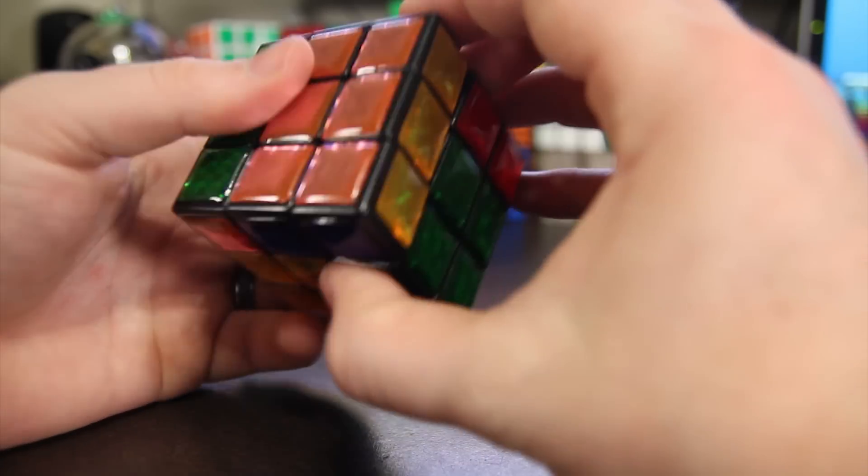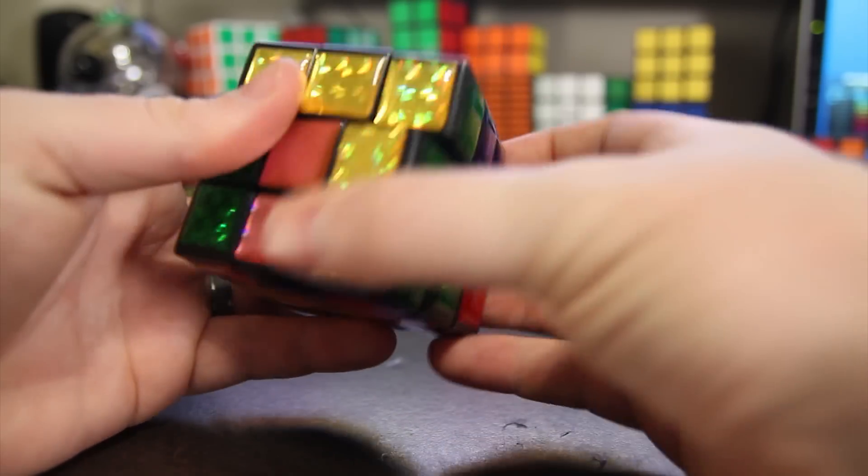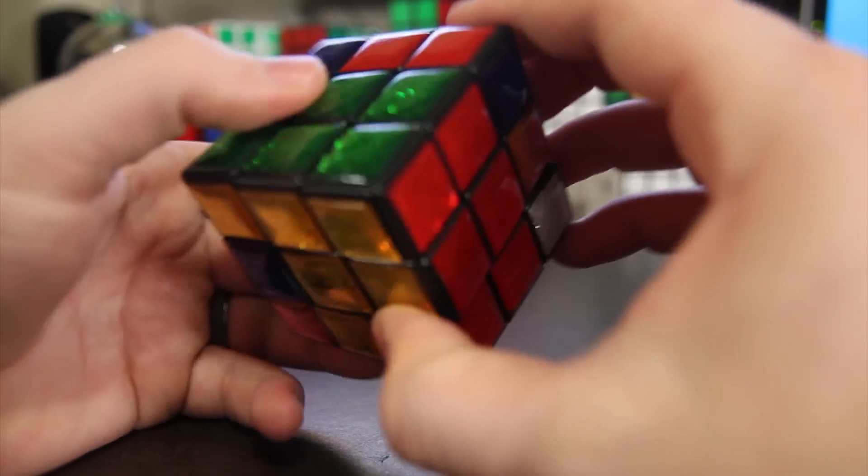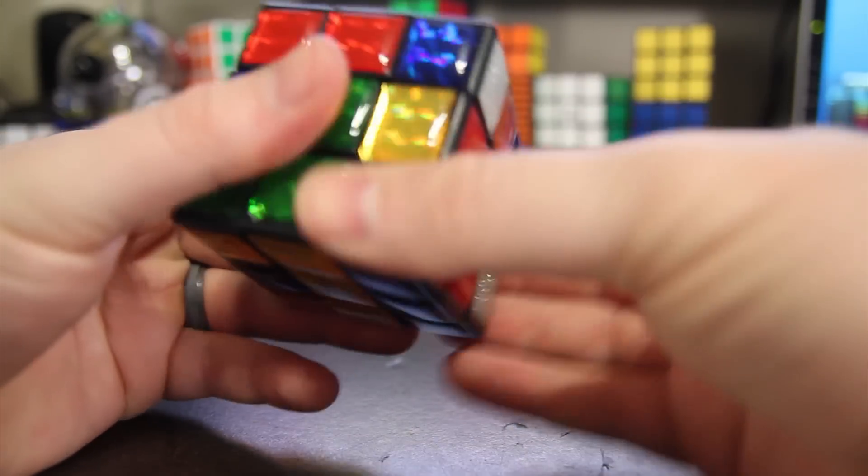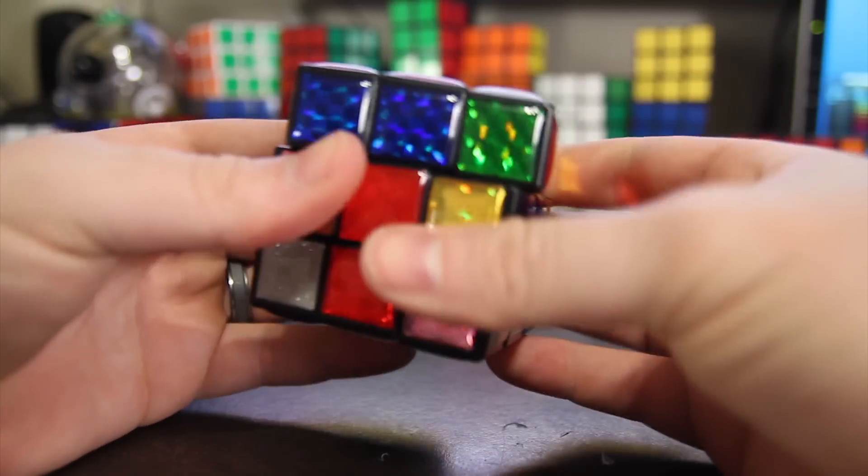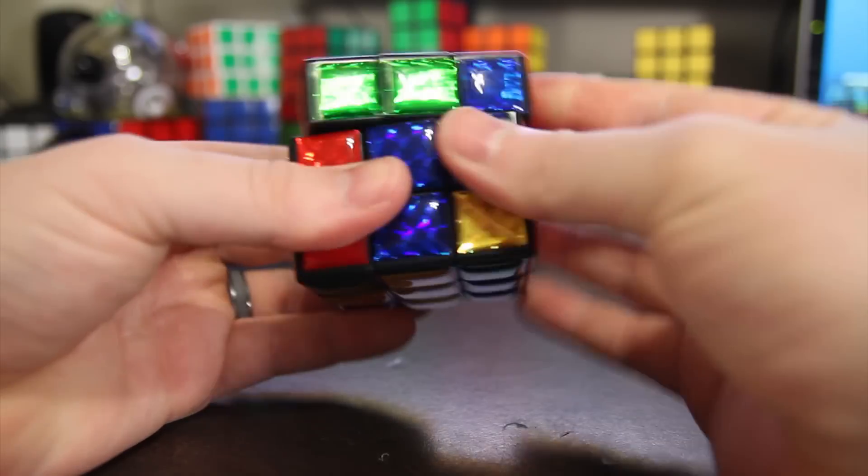Let's see how it turns. I'm going to scramble it. And it doesn't cut corners very well, but you wouldn't really expect it to, would you, if you're gonna have a hollowed out centered Rubik's Cube.